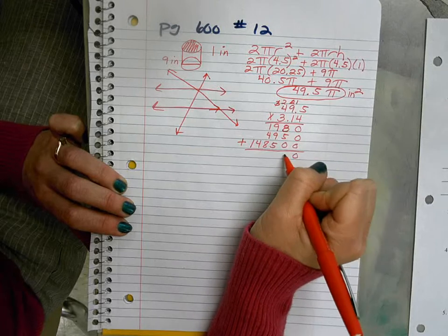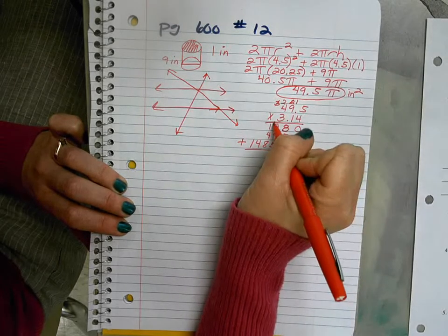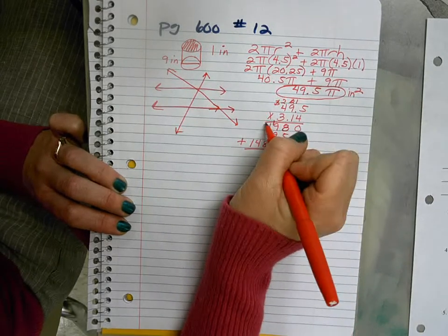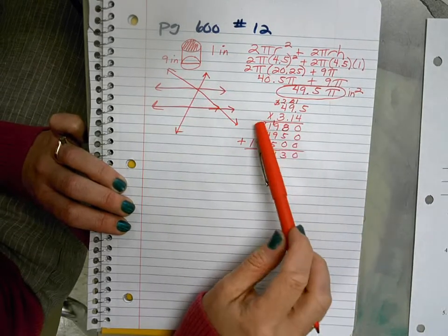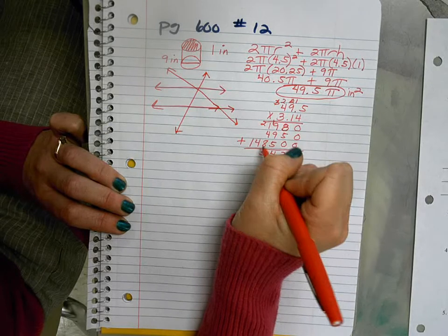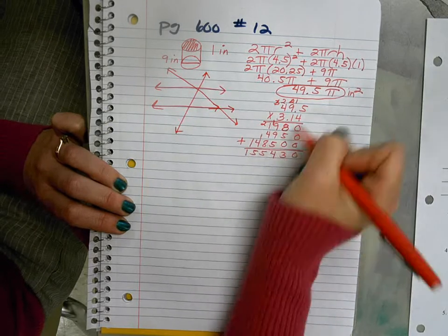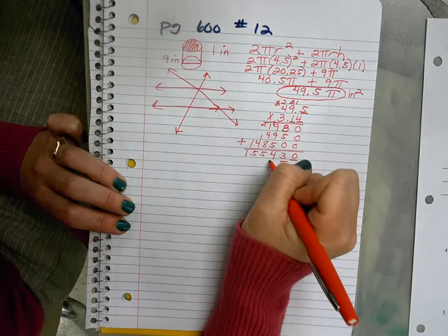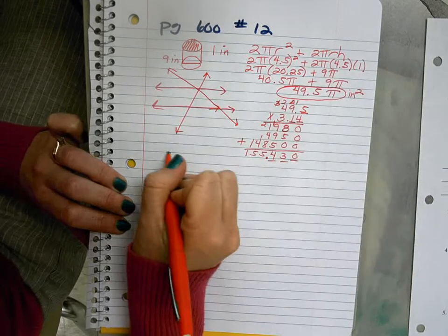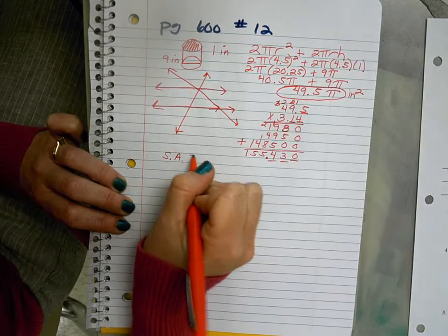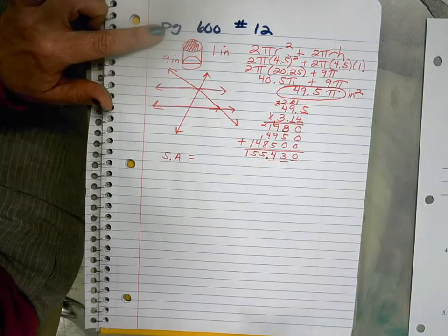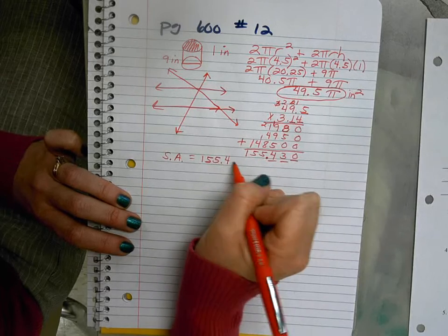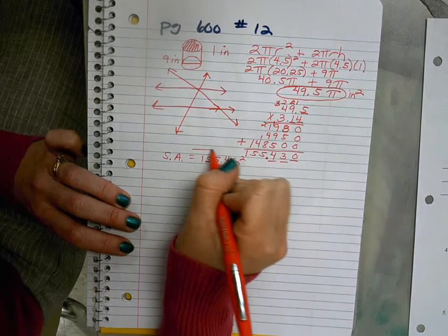We add it up. We get 0, 13, carry the 1, 18, 19 and 5 is 24, carry the 2, 10 and 5 is 15, carry the 1, and then be sure that we look at our three digits behind our decimal and include that in our final answer. So the surface area of our cylinder for number 12 should be approximately 155.4 inches squared.